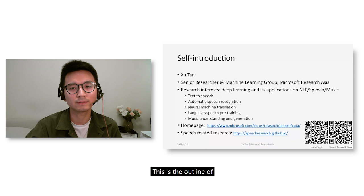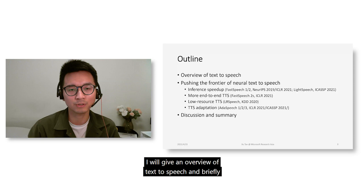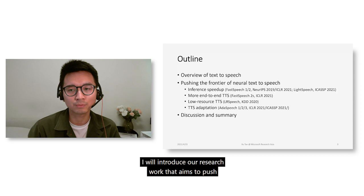This is the outline of this presentation, which mainly consists of three parts. In the first part, I will give an overview of text-to-speech and briefly introduce text-to-speech synthesis. In the second part, I will introduce our research work that aims to push the frontier of neural text-to-speech from different aspects.